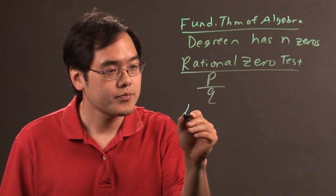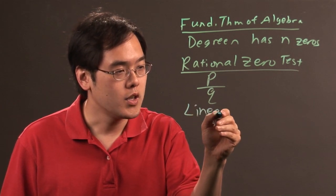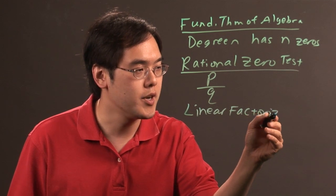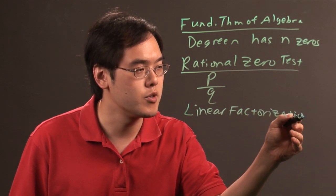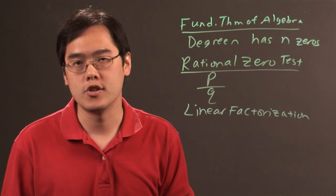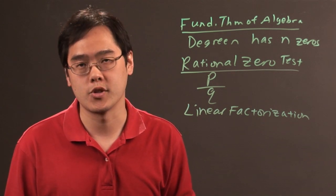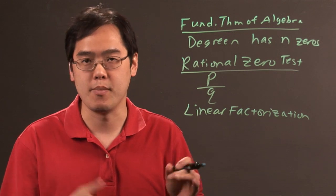From here you want to take into account the linear factorization theorem. In other words, being able to write the polynomial in terms of all the zeros, but in terms of the x powers, all the x powers will be of degree one. So it's going to be x plus something, x minus something.